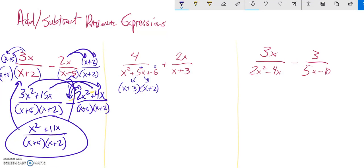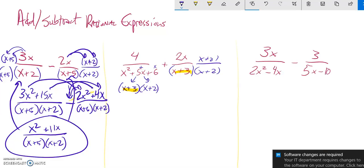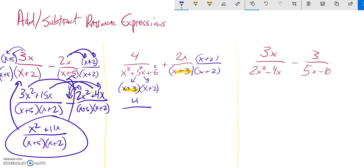That's nice. They both, if you'll notice, have an x plus 3 in common already. So I don't need to do anything to this denominator to make them alike. But here, I'm going to multiply this by x plus 2 over x plus 2.